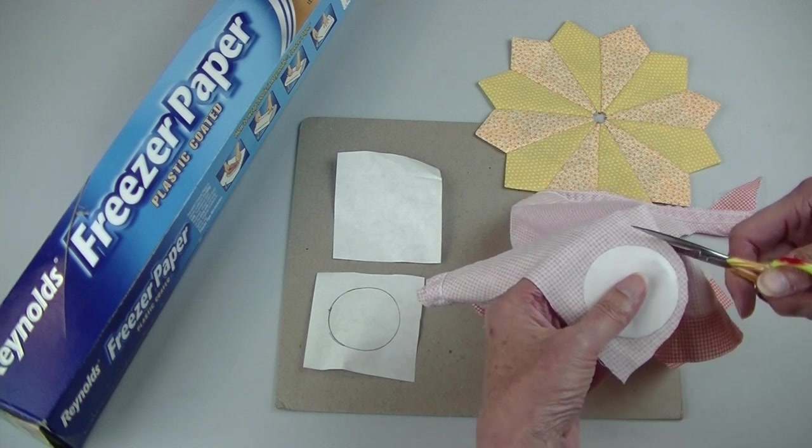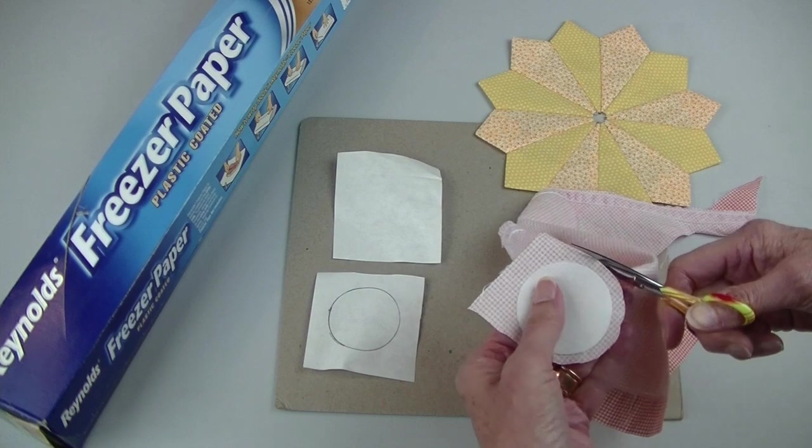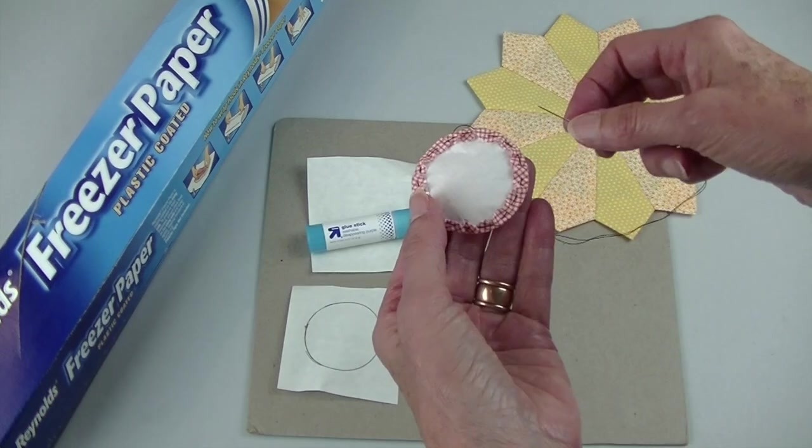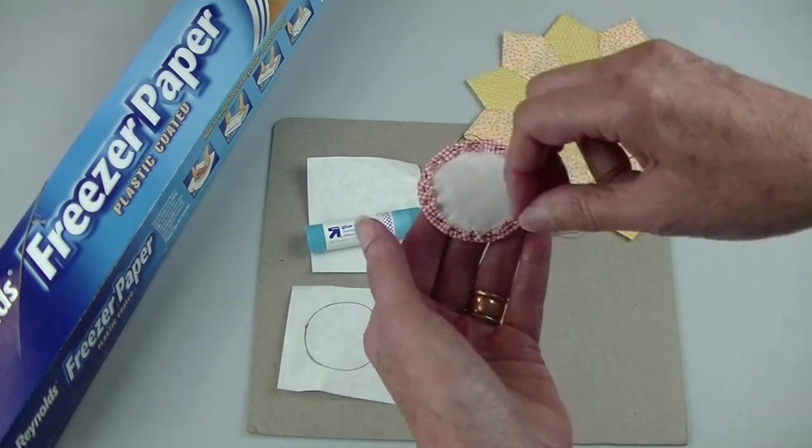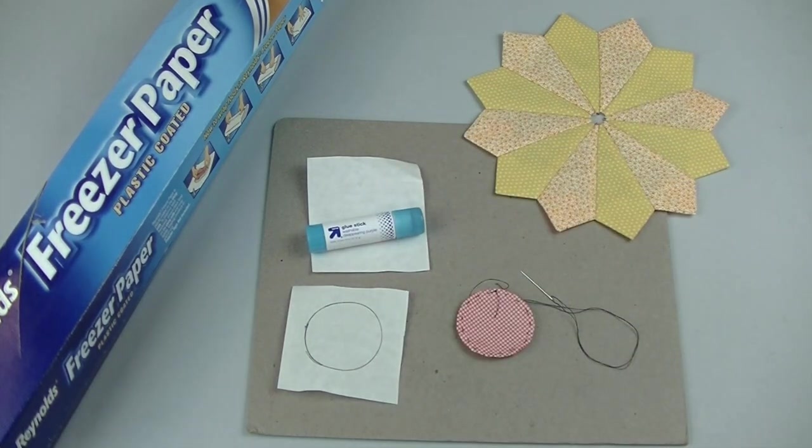So you want to eyeball about a quarter inch seam around the outside edge and cut out your circle. I hand basted the seam allowance to the back. But you can use a washable glue stick if you prefer.